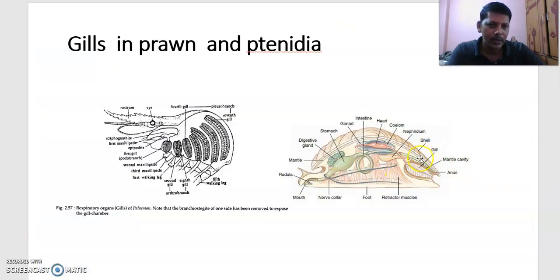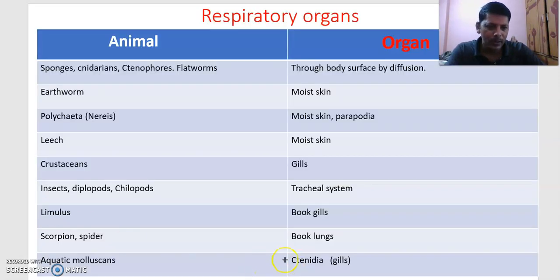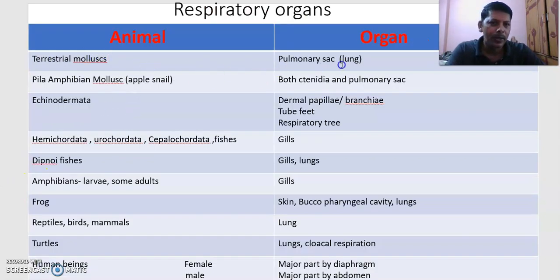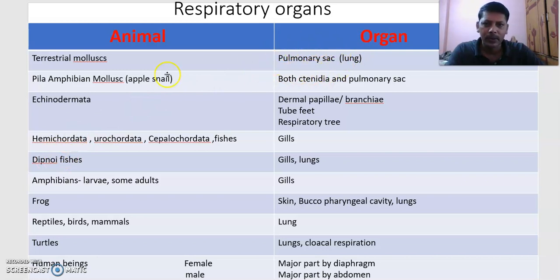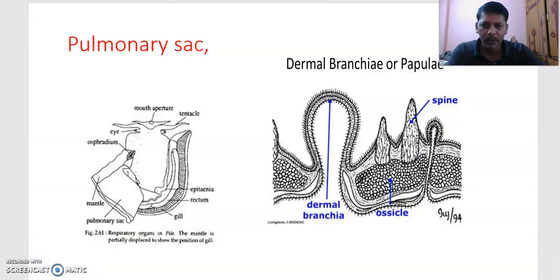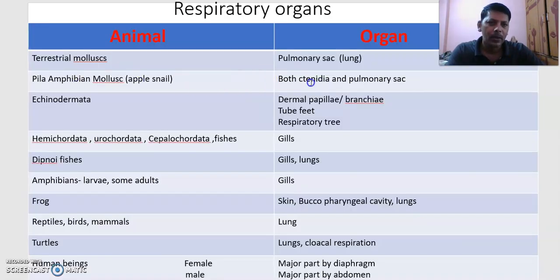The feather-like gills in molluscs are called ctenidia (C-T-E-N-I-D-I-A). Terrestrial molluscs have a pulmonary sac as their respiratory organ. Pila globosa (apple snail), an amphibious mollusc, has both ctenidia and a pulmonary sac as respiratory organs.